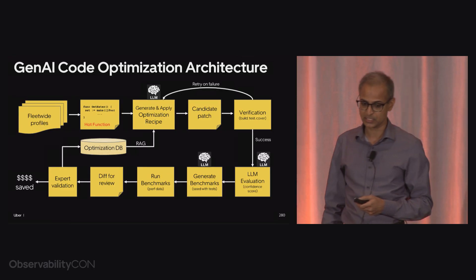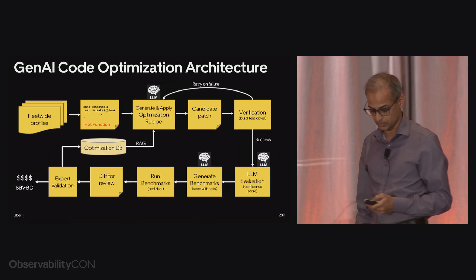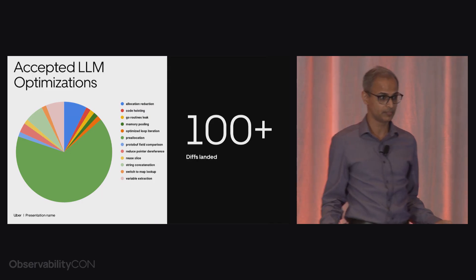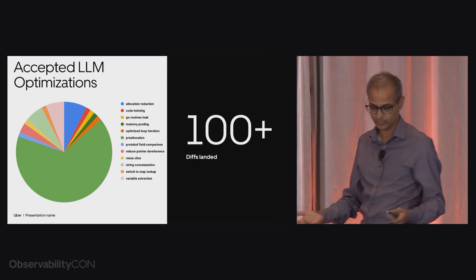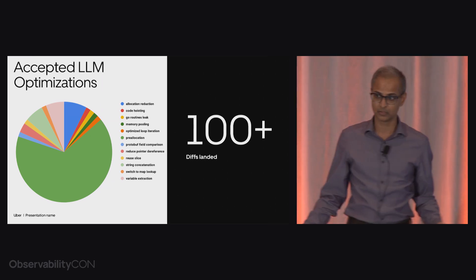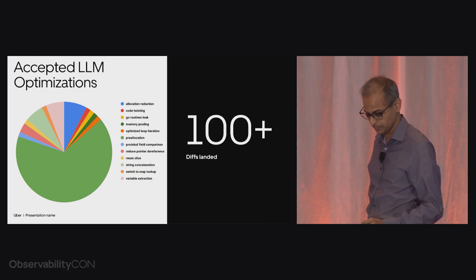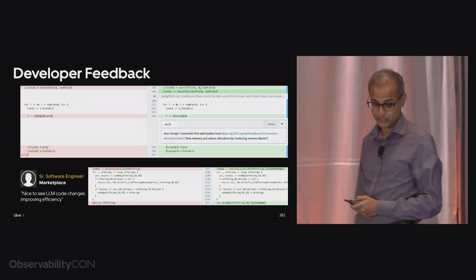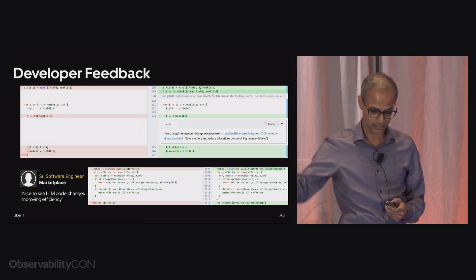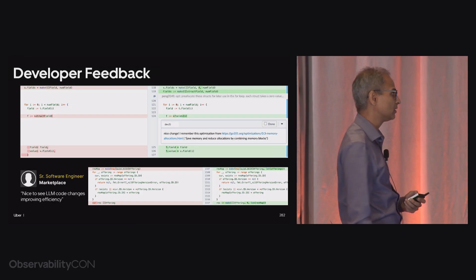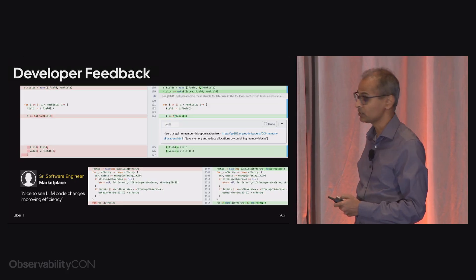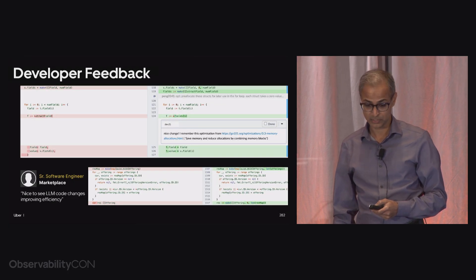Many times in the initial steps, we had experts validate them. By now, more than 100 automatic diffs have landed, falling into a whole lot of different categories. Since we use Go very frequently, a big chunk comes from memory allocation-related problems. Our developers love it. Here's a developer commenting: 'Nice change — I remember this optimization.' And another person says: 'Nice to see LLM code changes improving efficiency at scale in important services.'